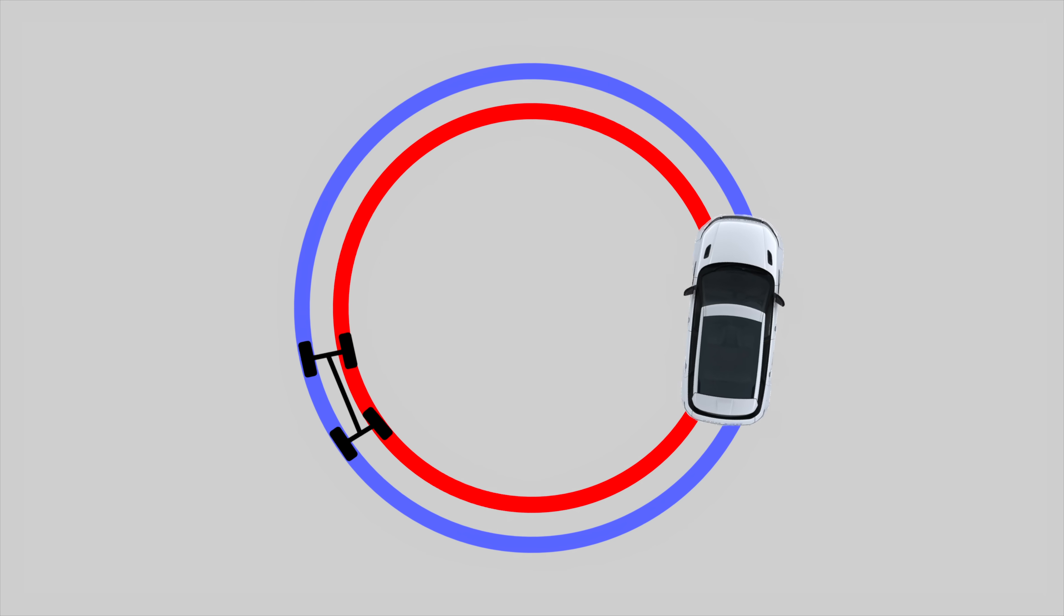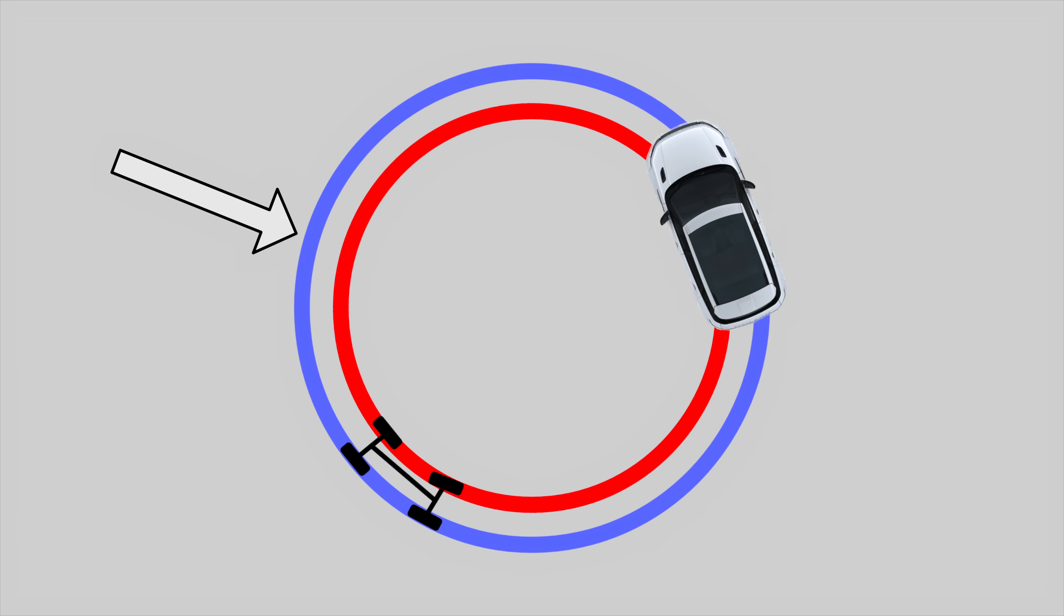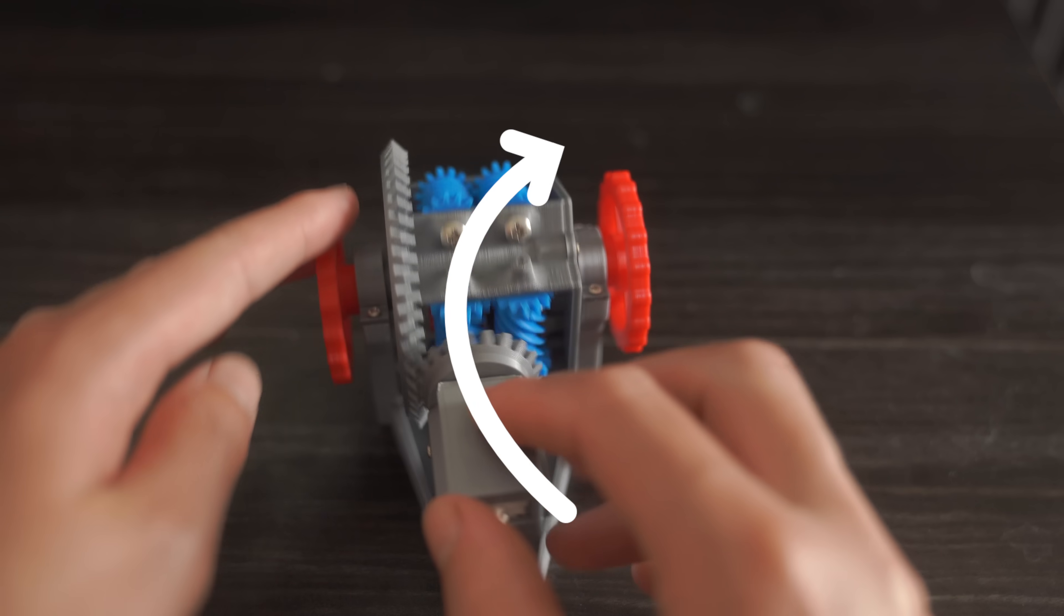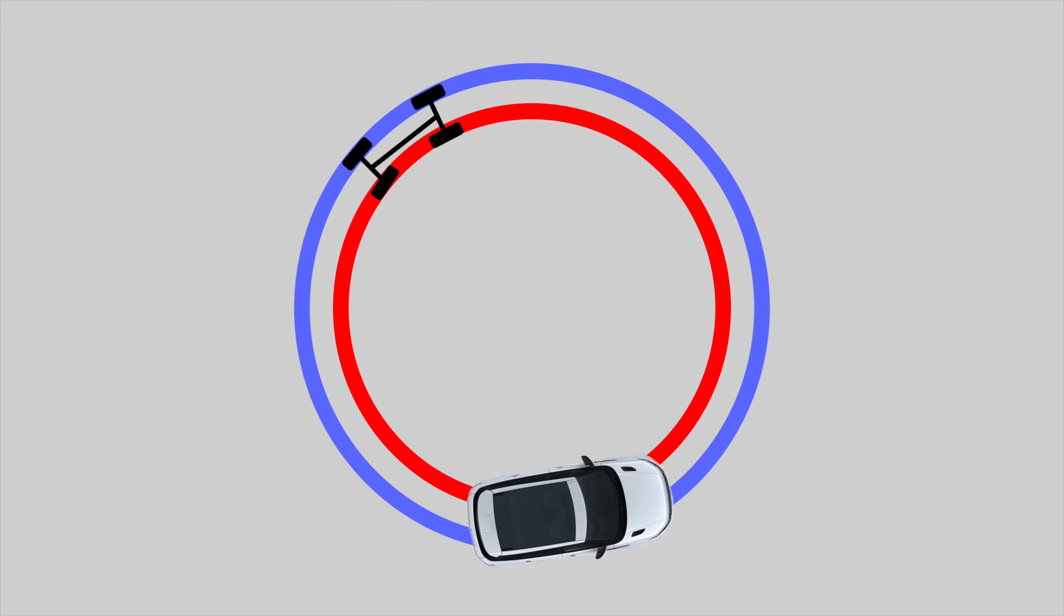When a car goes around a turn, the outside wheels have to travel a greater distance. The length of the outside circle is greater than the length of the inside circle. A differential allows the wheels to turn at different speeds, which is required when a car is negotiating a turn.